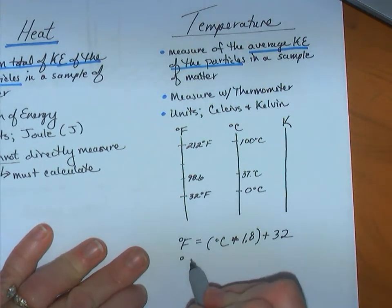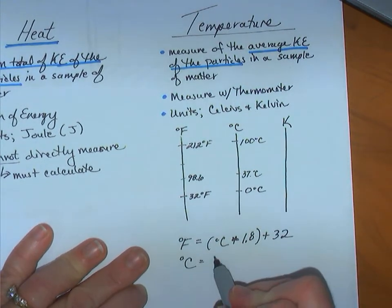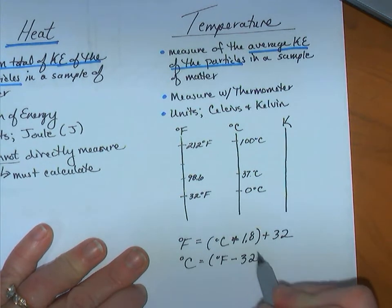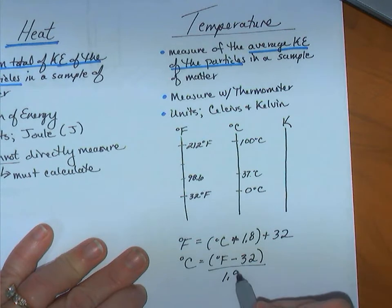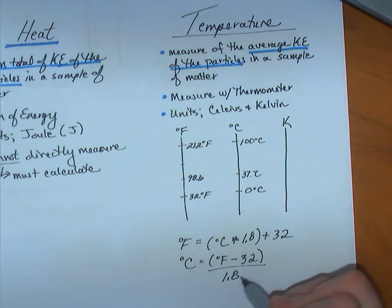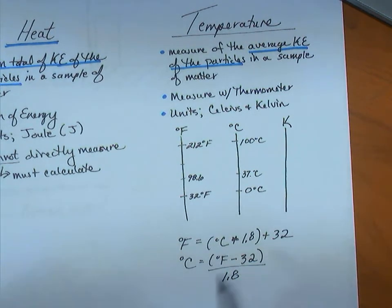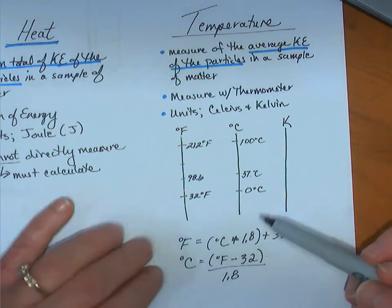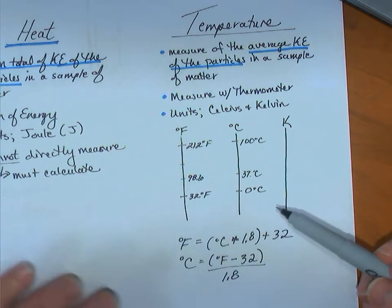So, to get degrees Celsius, we'll take our degree Fahrenheit, subtract 32, and then divide that by 1.8. You don't have to memorize these. I will provide these. However, very rarely are we converting between Celsius and Fahrenheit. We are usually converting between Celsius and Kelvin.